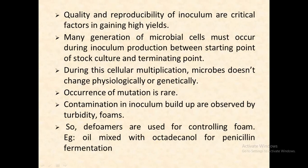Quality and reproducibility of inoculum are critical factors in achieving high inoculum performance. During inoculum built-up, generation of microbial cells must occur between the starting point of stock culture and the terminating point. Starting from stock culture — perhaps 3 ml — it is scaled up to a high volume with more microbes. During this cellular multiplication, microbes should not change physiologically or genetically. Mutation very rarely occurs. Contamination in inoculum built-up is detected by turbidity and foam.